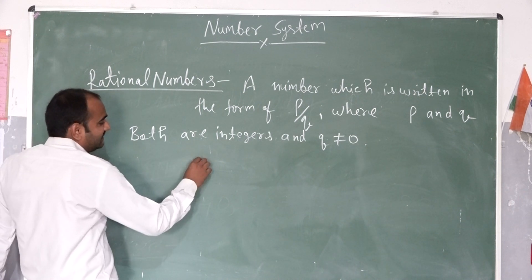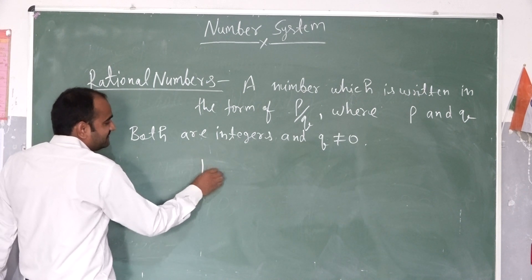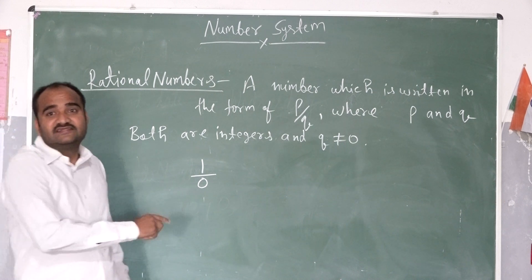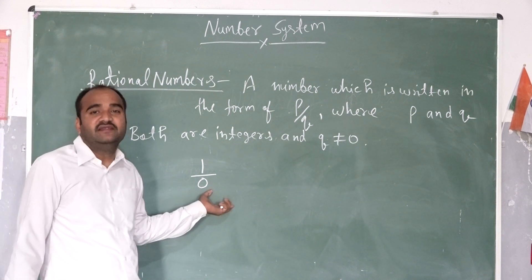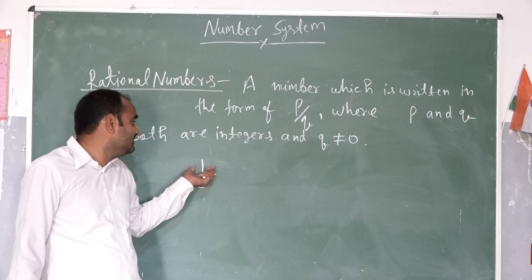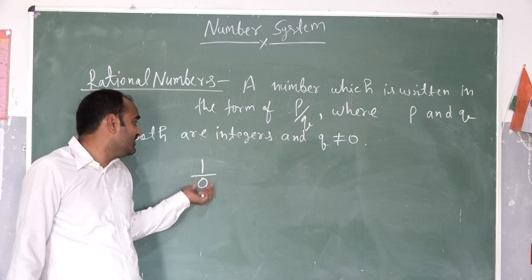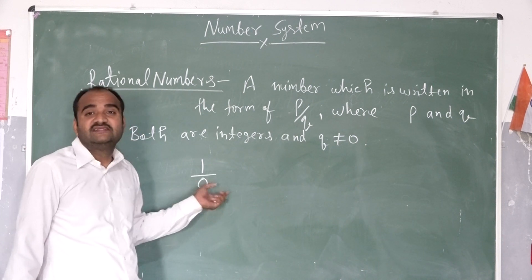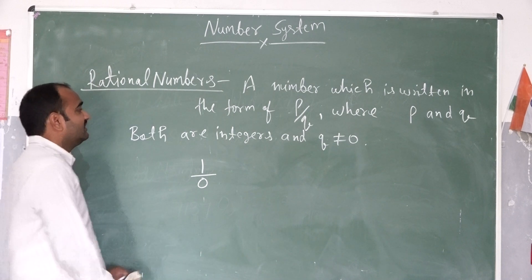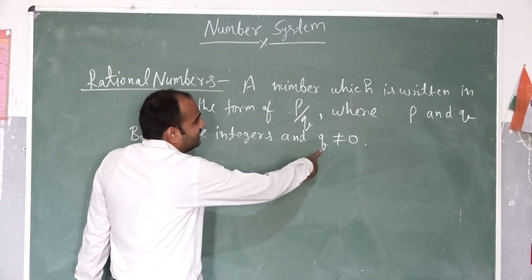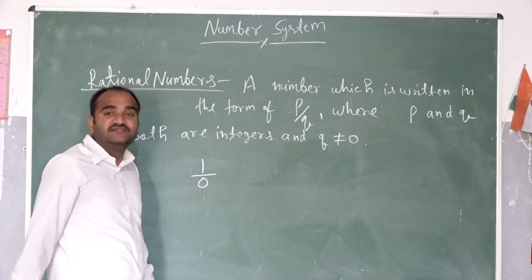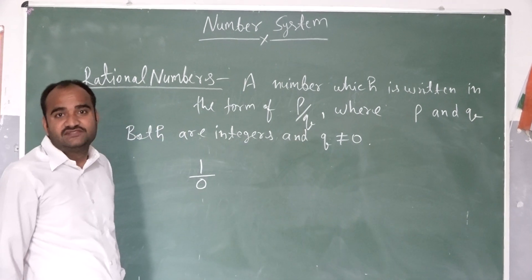Because if any number is divisible by 0, then this is not defined. Any number divisible by 0 is not defined. So the denominator is not equal to 0.